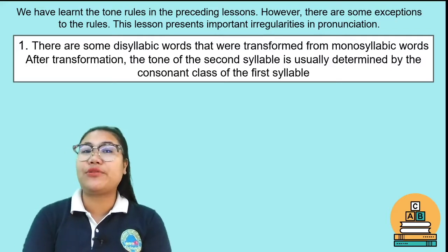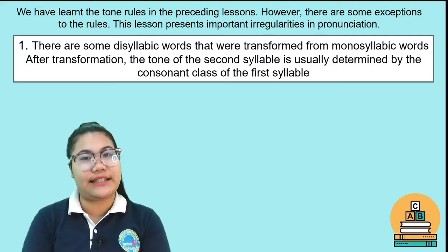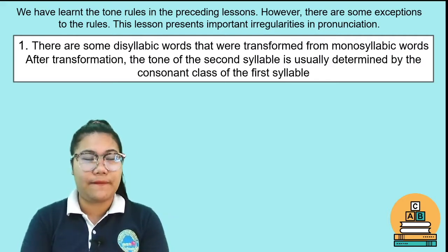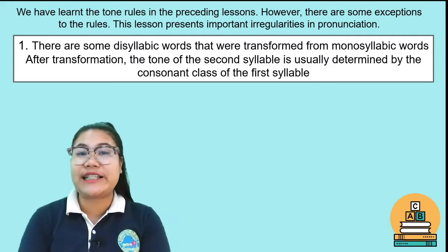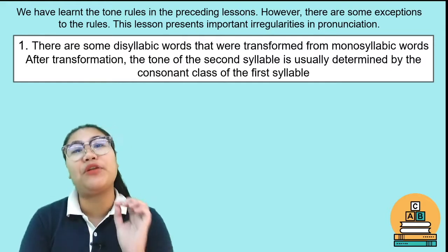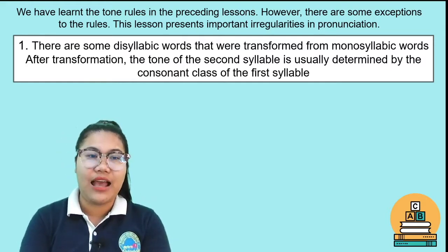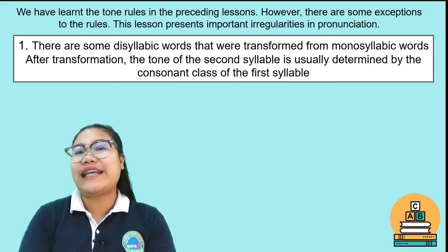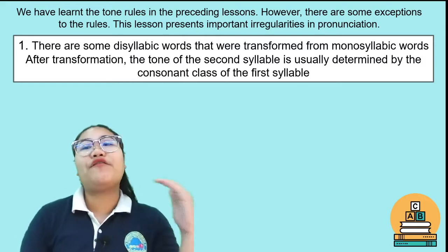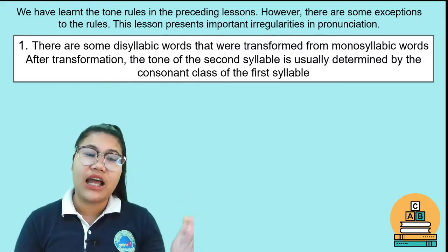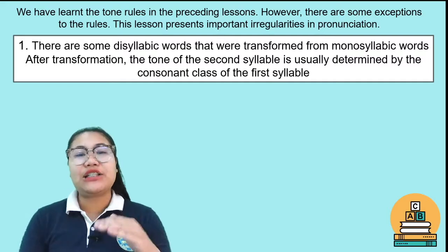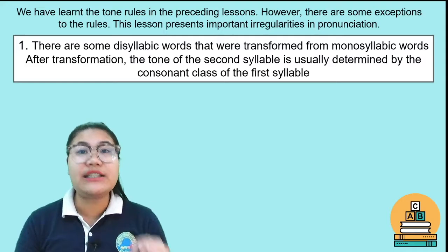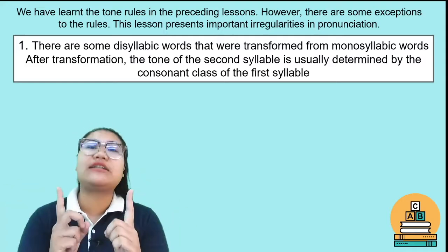We have learned the two rules in the preceding lesson. However, there are some exceptions to the rules. This lesson presents important irregularities in pronunciations. The first one: there are some disyllabic words that were formed from monosyllabic words after transformation. The tone of the second syllable is usually determined by the consonant class of the first syllable.